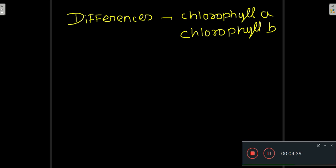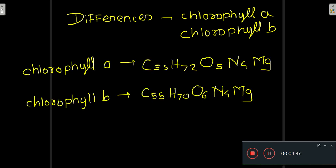Now let's talk about the differences between chlorophyll a and chlorophyll b. The molecular formula of chlorophyll a is C₅₅H₇₂O₅N₄Mg. In chlorophyll b, H₇₂ becomes H₇₀ and O₅ becomes O₆. This is the difference between the molecular formulas of chlorophyll a and chlorophyll b.